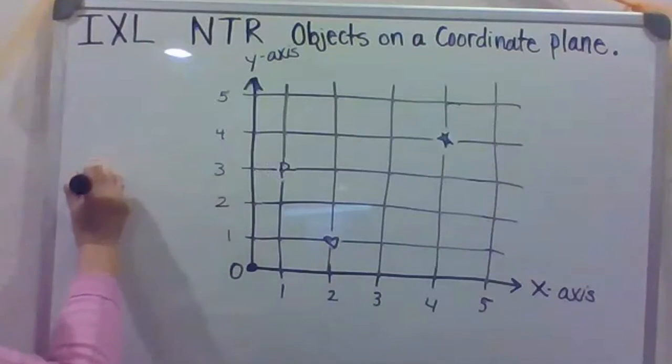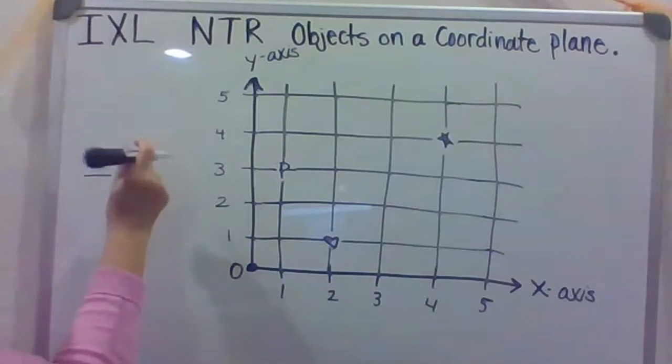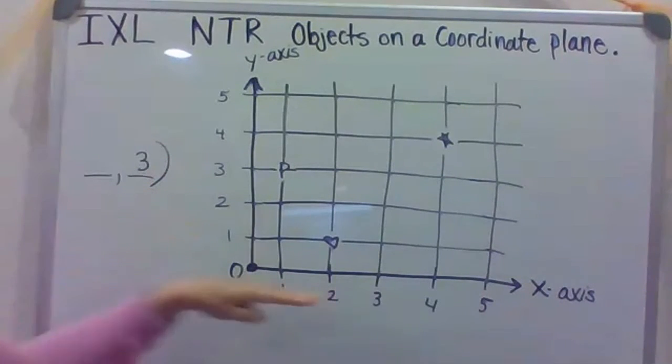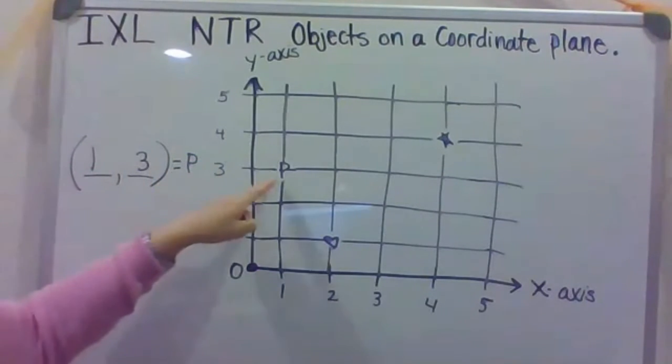So we would say, we don't know what the X is yet, but the Y coordinate was a 3. So what would be the X coordinate? So let's see where it's at. It's right here. So we go from the origin over how many, over 1, and up 1, 2, 3. So that would be the ordered pair for point P on this coordinate plane.